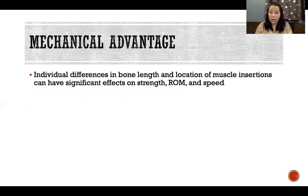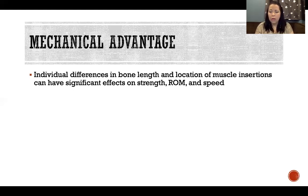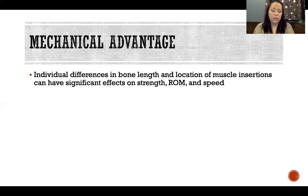Why this matters in biomechanics: the mechanical advantage at different joints gives those joints different functions. When comparing individual differences in where muscles insert and how joints function, we see a lot of anatomical variability from one person to another, which changes their mechanical advantage, changes how their muscles and joints function, and changes what types of activities they might excel at. Individual differences in bone length and the location of muscle insertions have a very significant effect on strength, range of motion, and speed.